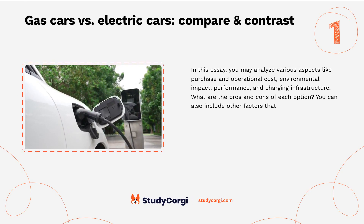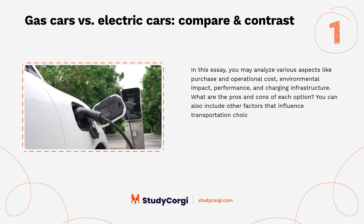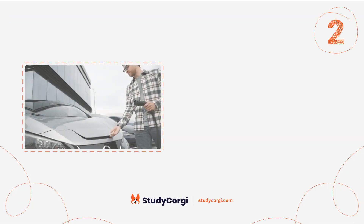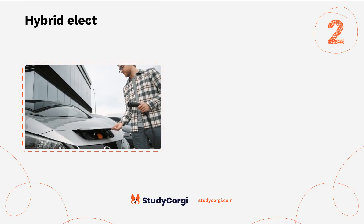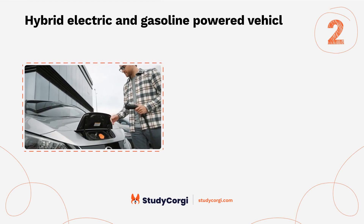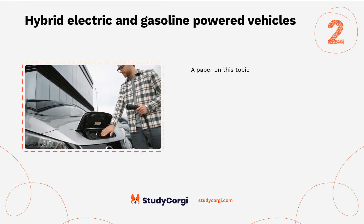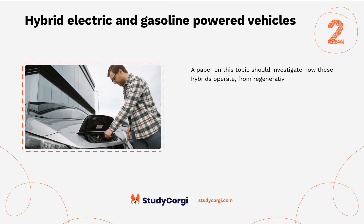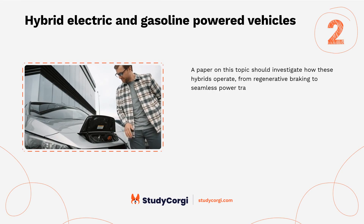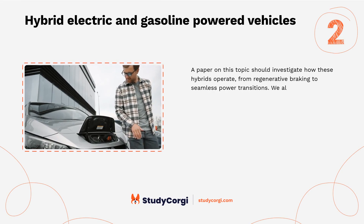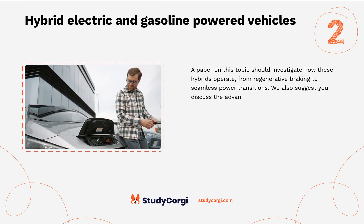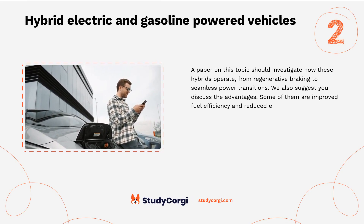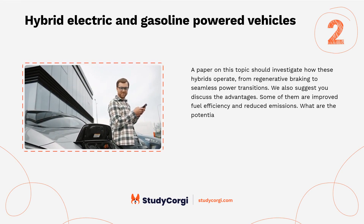Hybrid, electric, and gasoline-powered vehicles. A paper on this topic should investigate how these hybrids operate, from regenerative braking to seamless power transitions. We also suggest you discuss the advantages — some of them are improved fuel efficiency and reduced emissions — as well as the potential disadvantages.